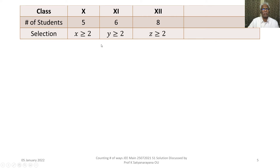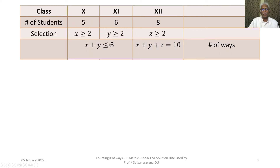There is another constraint: at most 5 students will be selected from class 10 and class 11 combined. That means x + y ≤ 5, with x + y + z = 10. We will now count the number of ways of doing it.